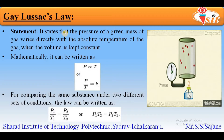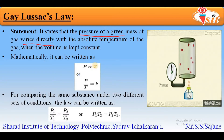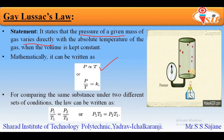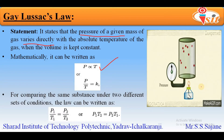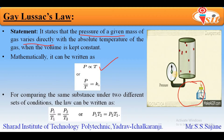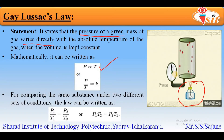In Gay-Lussac's Law, the statement is that the pressure of a given mass of gas varies directly with the absolute temperature of the gas, with volume kept constant. Mathematically, pressure is directly proportional to T. In the diagram on the right-hand side, the container has a fixed volume — unlike the piston arrangement in Boyle's Law and Charles' Law. As temperature is changed, the gas tries to expand but since the container has fixed volume there is no space for expansion, so the pressure of the system increases.